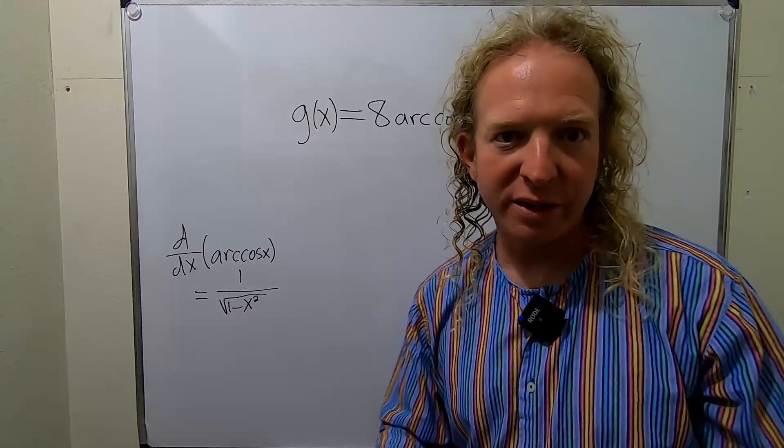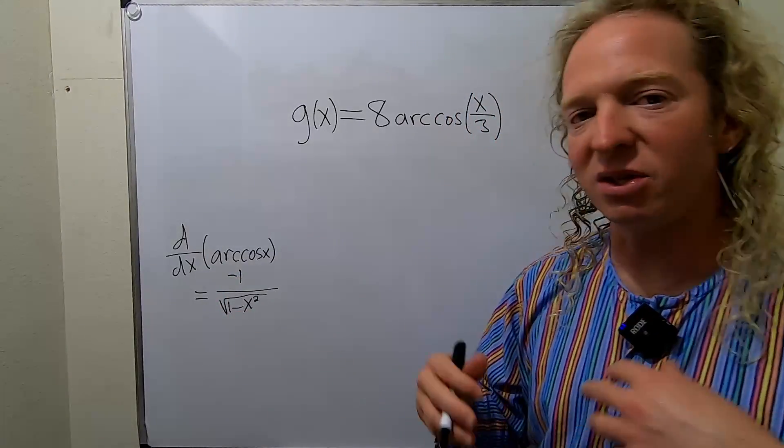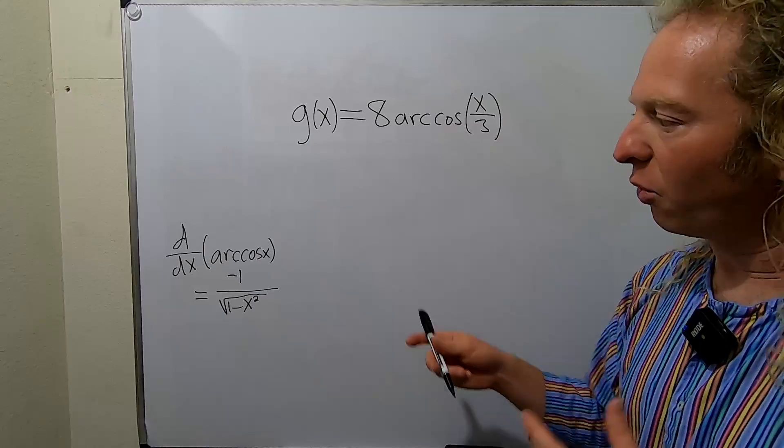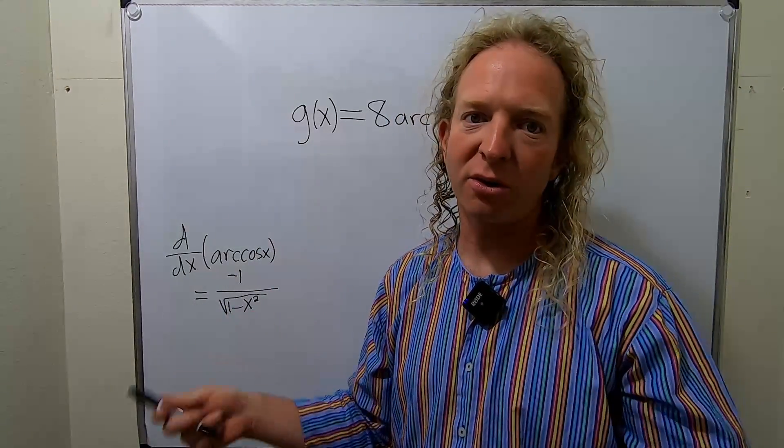So the arc cosine is really easy to remember because it's exactly the same, except it has a negative sign. So that's the only difference. So the way I do this one is I just know for arc sine, it's positive. For arc cosine, it's negative.